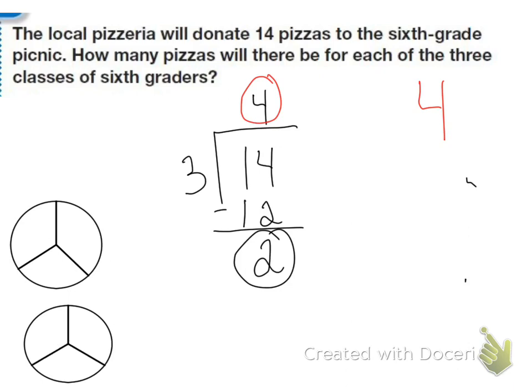We can see that one class gets 2 pieces. So that's 2 of the 3 pieces. So that's 2 thirds. So each class is going to get 4 and 2 thirds of the pizzas.